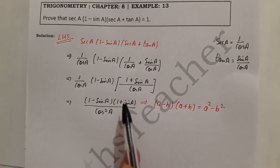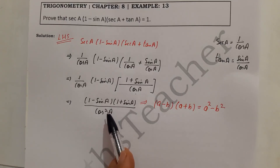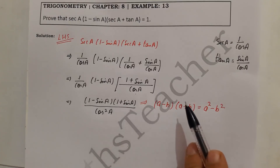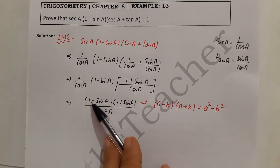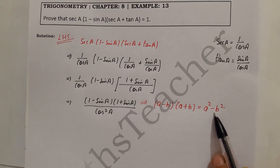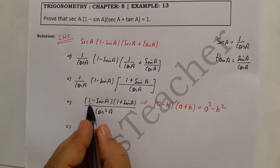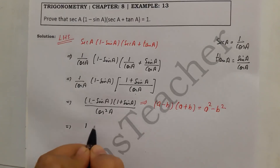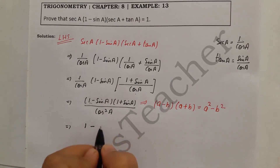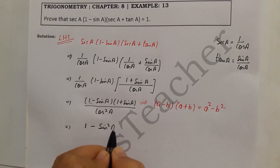If you think the logic is correct you will reach the answer. Using (a minus b)(a plus b) equals a squared minus b squared: here a is 1, so a squared is 1, and b is sin a, so b squared is sin squared a. This gives us 1 minus sin squared a in the numerator.